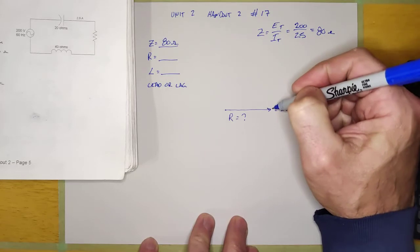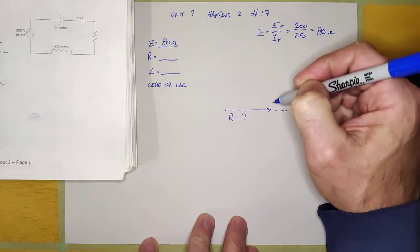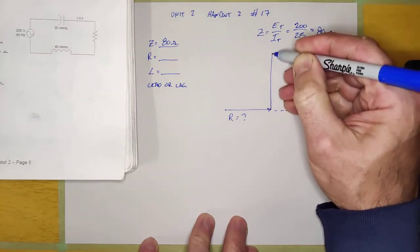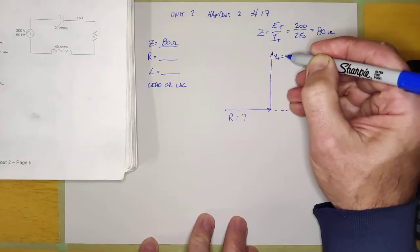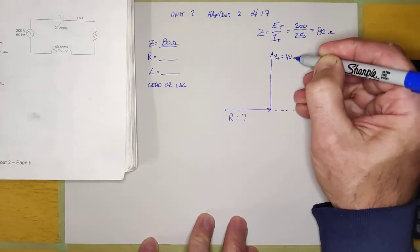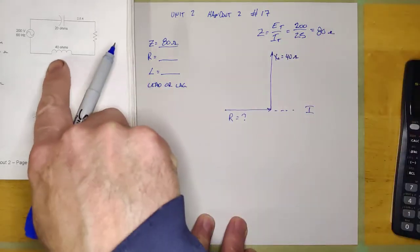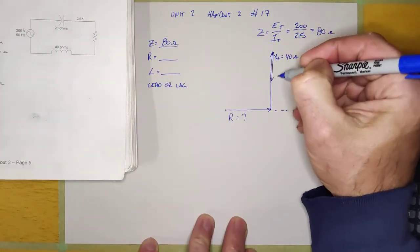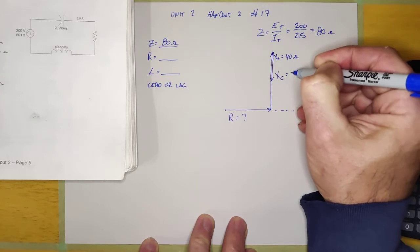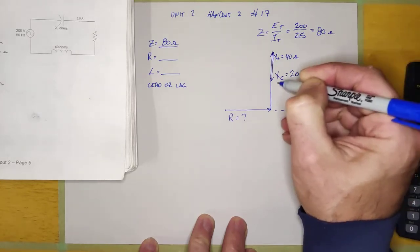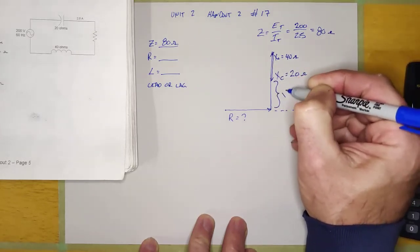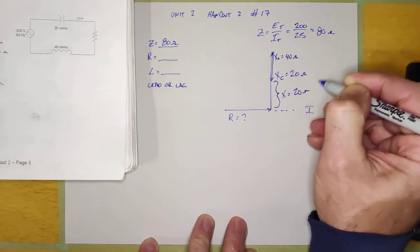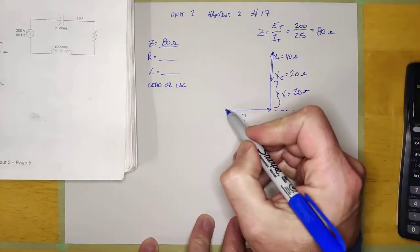and the next phasor I'm going to draw is the inductor XL, and it's 40 ohms. There's the inductor there. There is XC, it's 20 ohms, which means that X here is 20 ohms. It's going to be 40 minus 20, right?